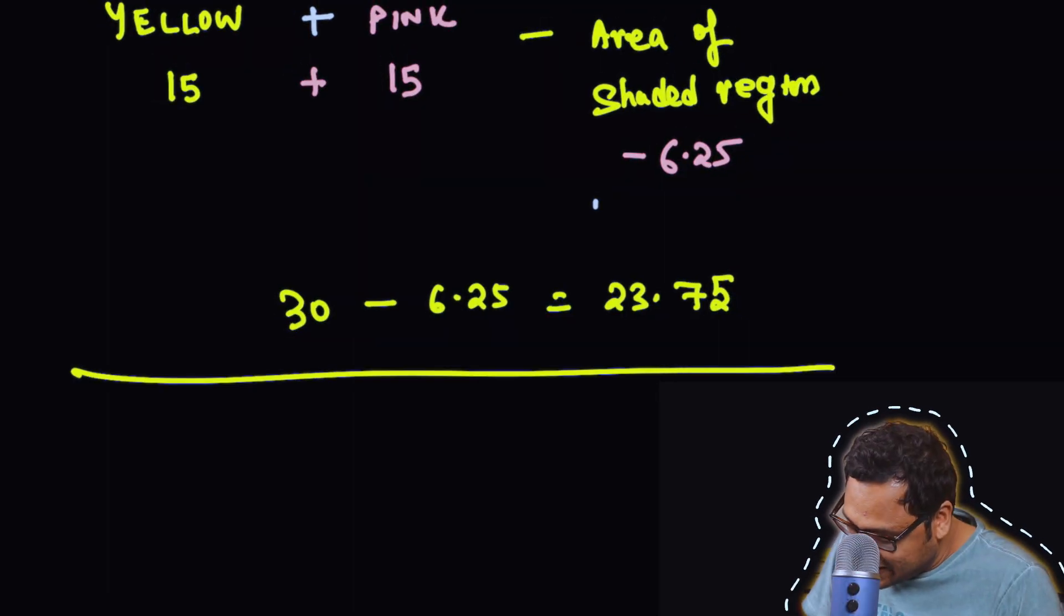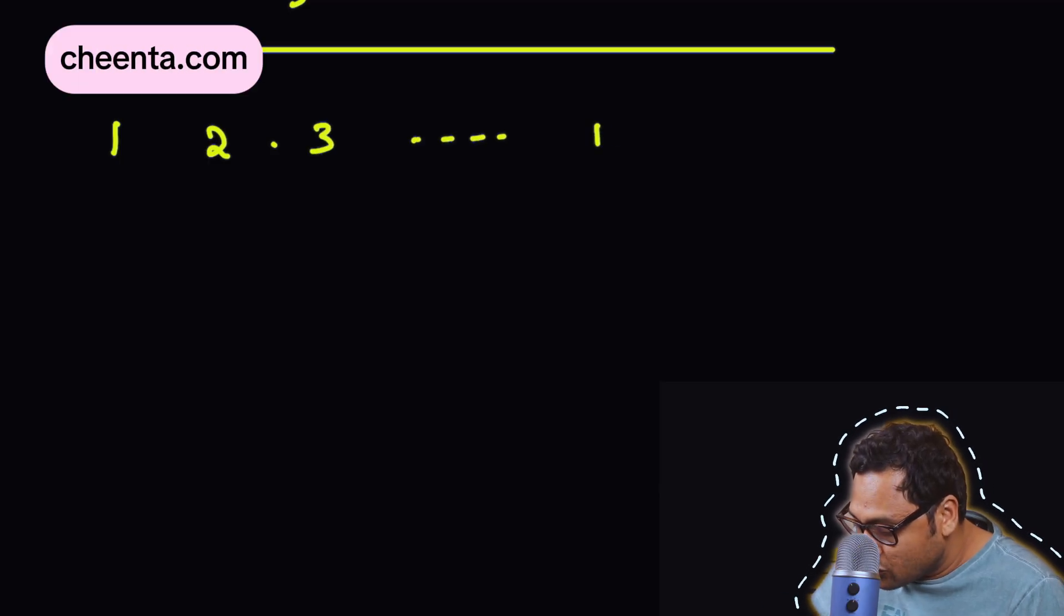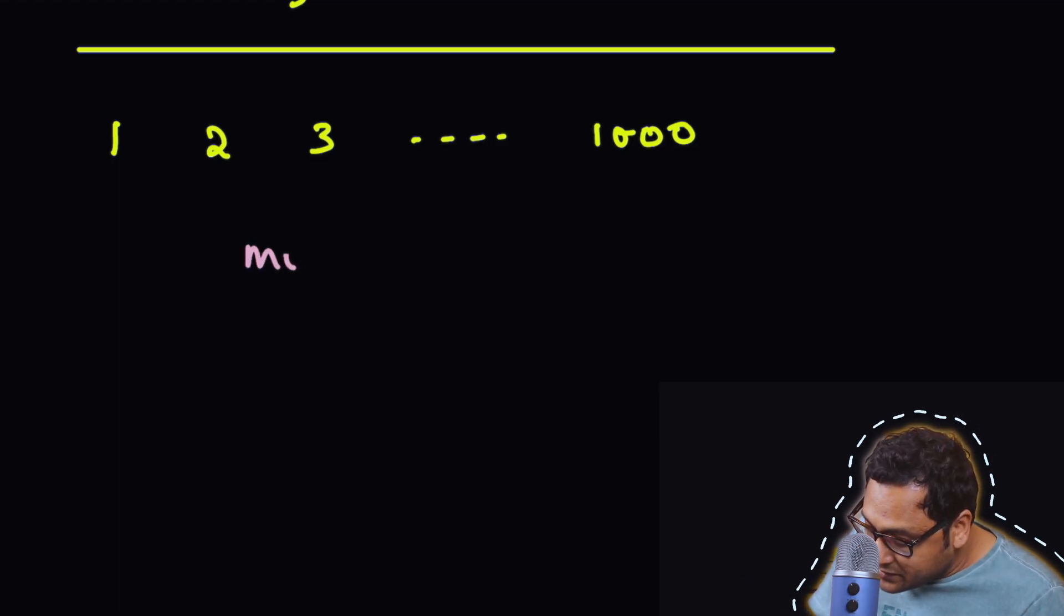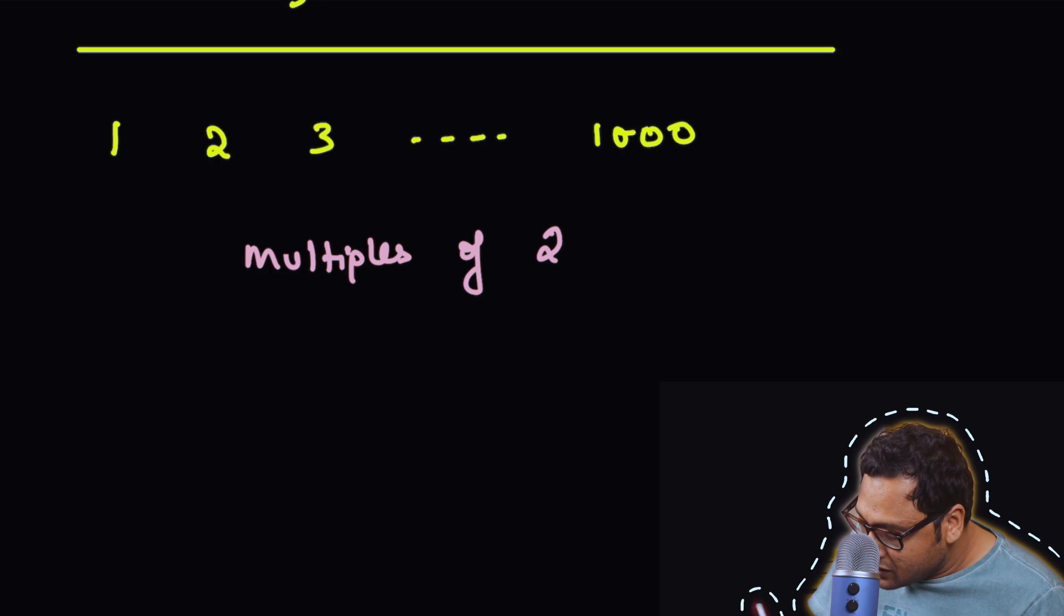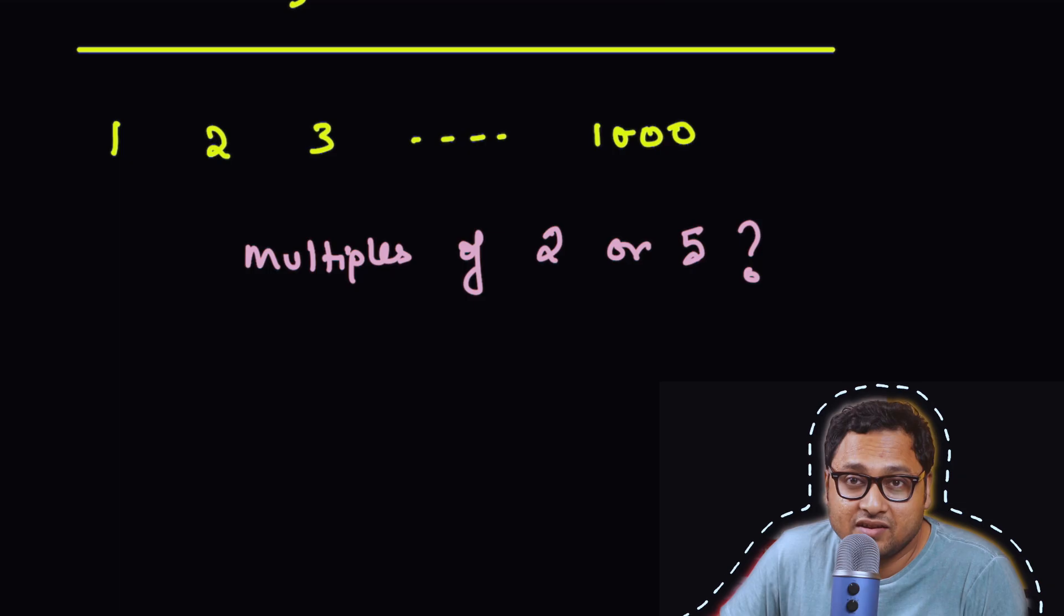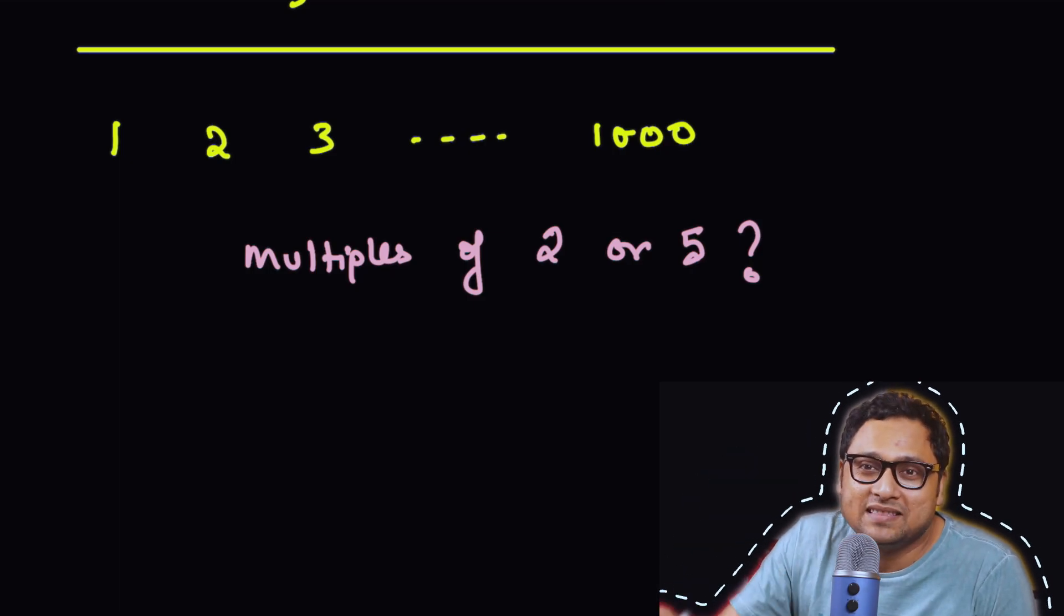Now let me give you the challenge question. It's based on the same set theory principle that we learned in geometry. Now we will apply it in combinatorics. It's a very beautiful thing. Here is an application of the same idea. Suppose you have the numbers from 1 to 1,000, all the whole numbers. How many numbers are there that are multiples of 2 or 5? Can you give it a try? And if you have the answer, put it in the comment section.